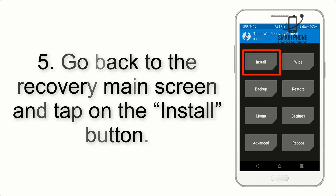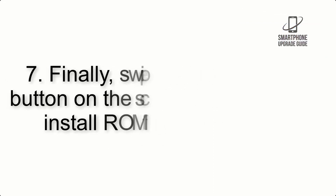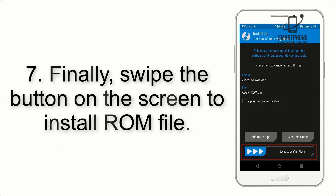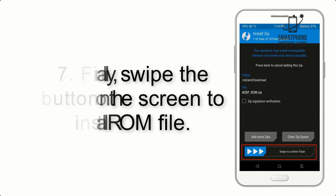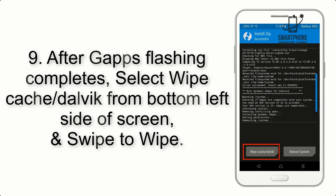Step 4: Swipe the button to wipe the device. Step 5: Go back to the recovery main screen and tap on the Install button. Step 6: Navigate to the storage and select the ROM zip file. Step 7: Swipe the button on the screen to install the ROM file.